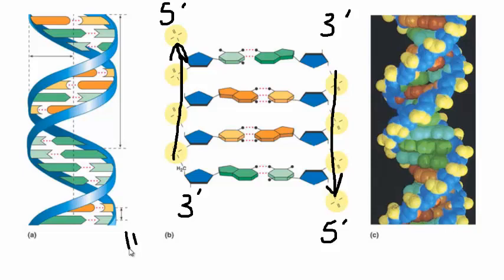For that reason, we say the two sides of the DNA molecule are anti-parallel. They are parallel to each other, but they run in opposite directions, so we call that anti-parallel.